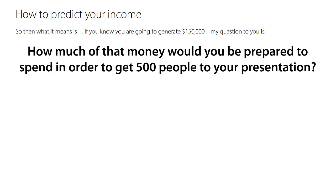But let's think about this in a more creative way. If we know our conversion rate, the price of our product, and all we need to do is get in front of people — how much would you be prepared to spend to get 500 people to your presentation? Would you spend $10,000? Would you set aside a marketing budget of $10,000 in order to make $150,000? For every $10,000 you spend, if you can get 500 people to see your presentation, you make $150,000. Why would you not do that?